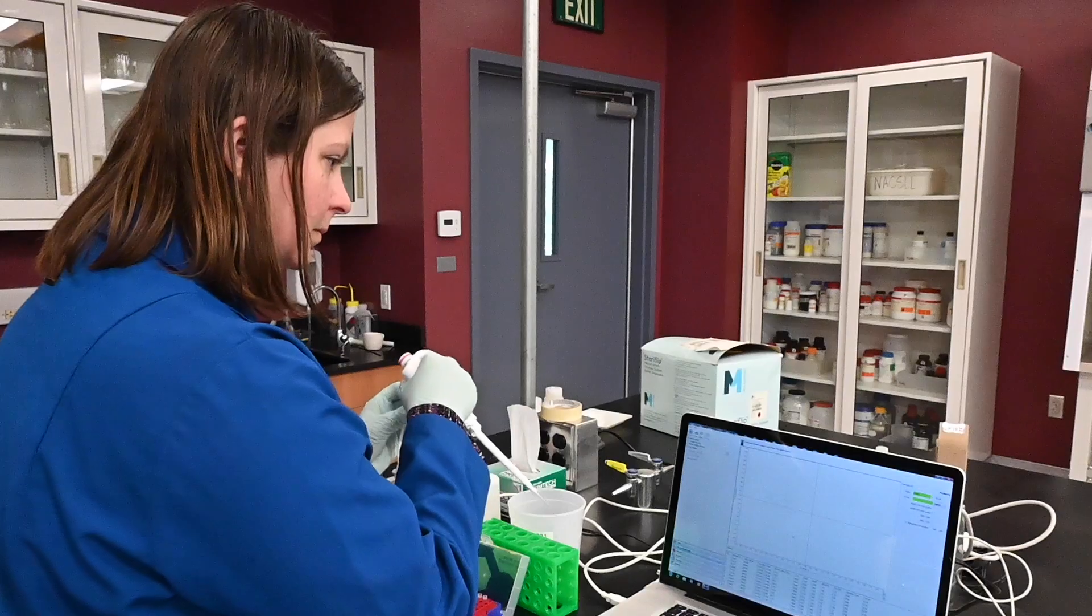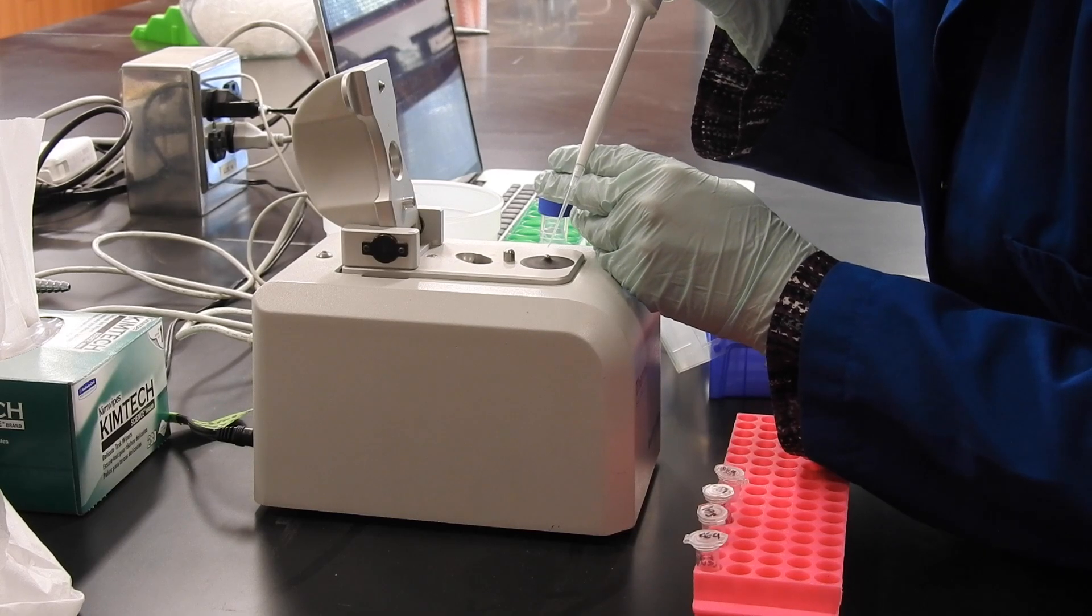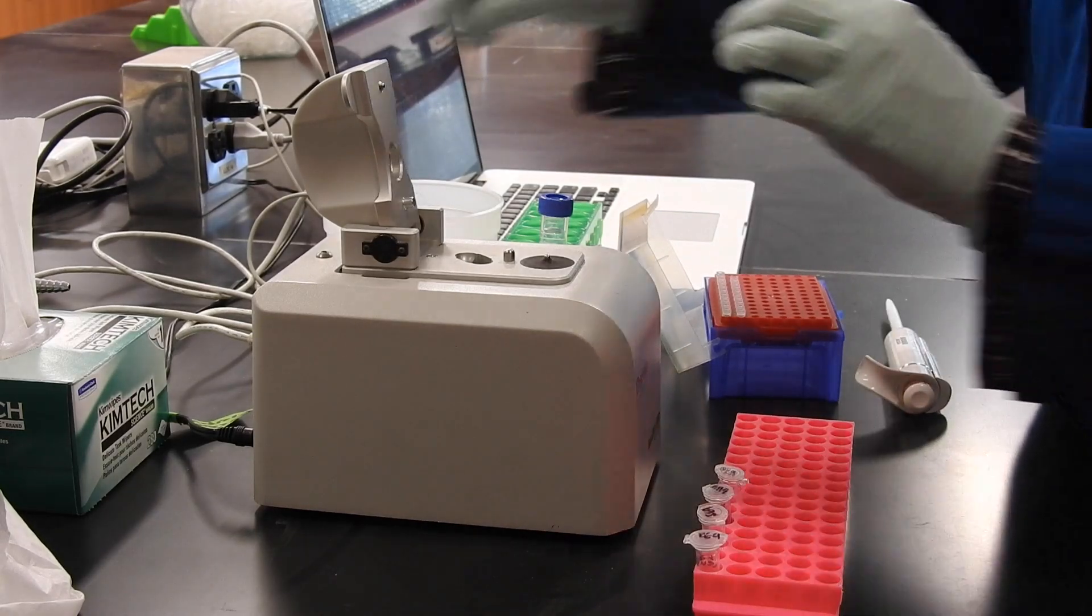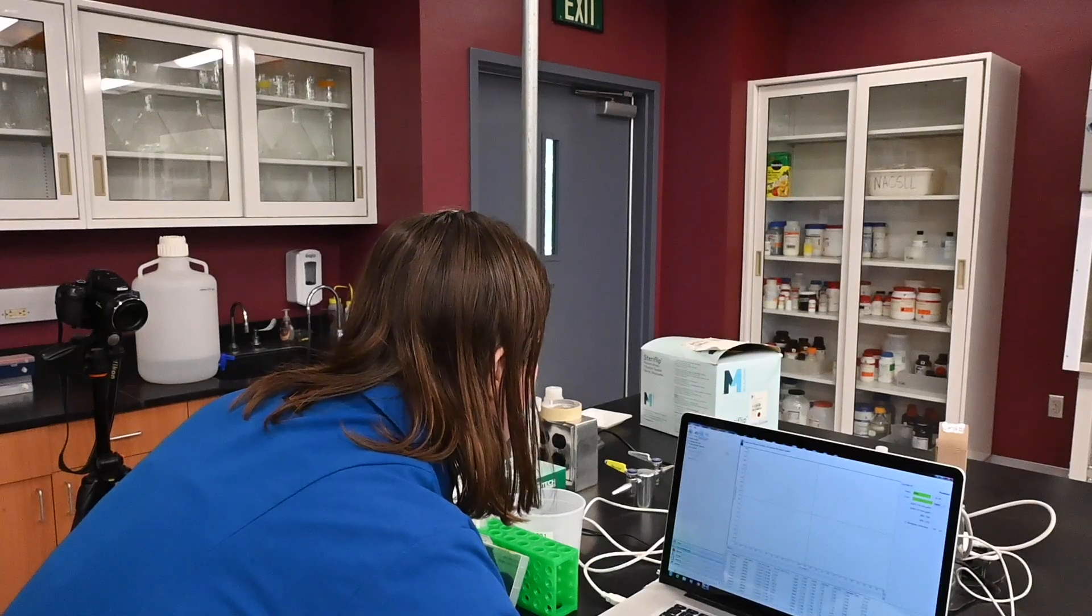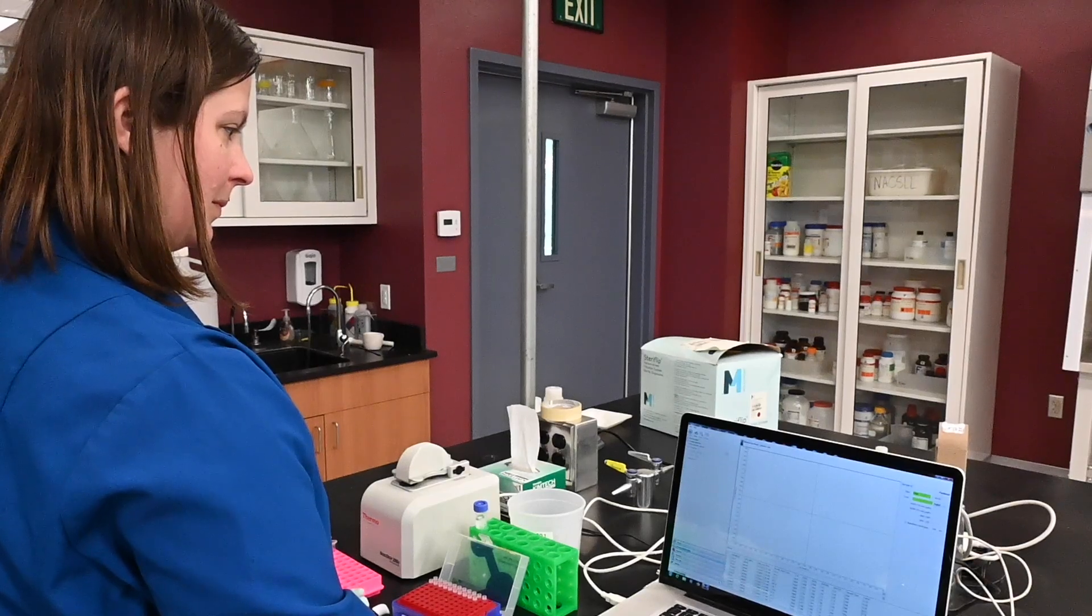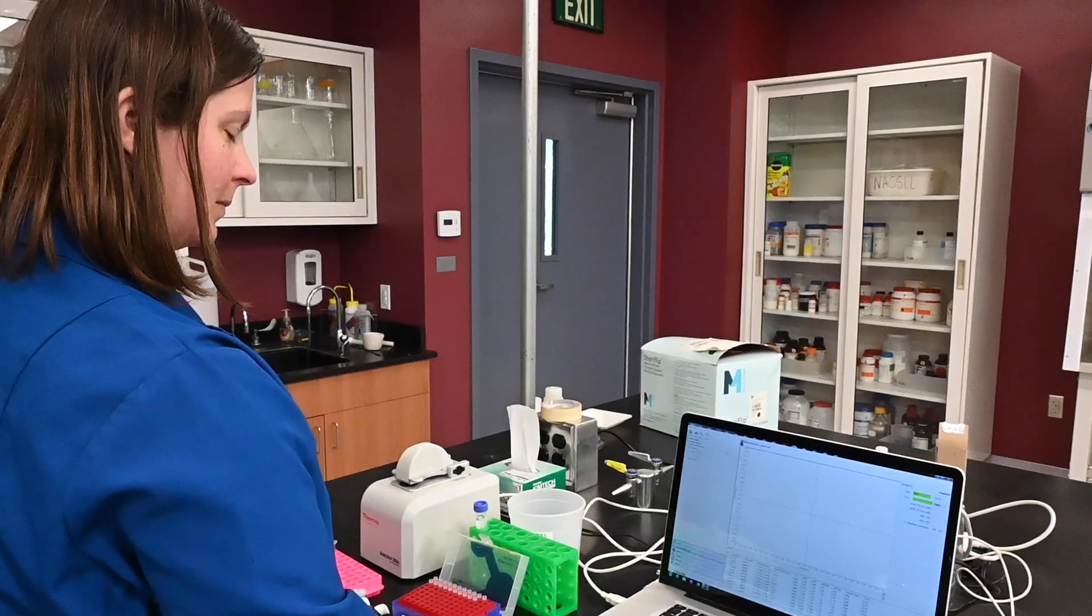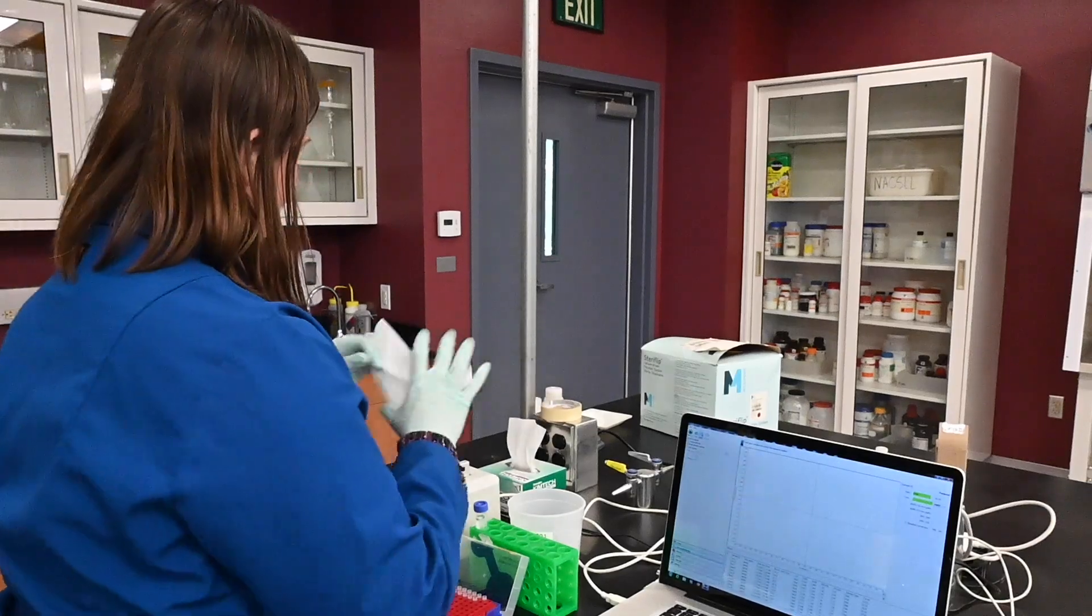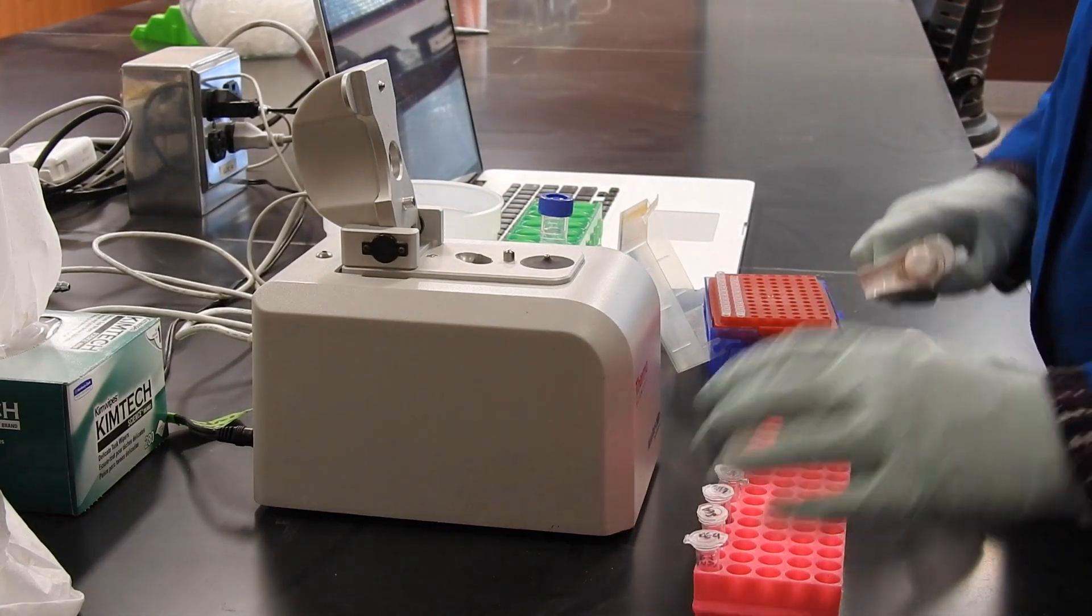So first I need to add a blank to have a background measurement. I'm taking one microliter of the resuspension buffer and carefully putting it on the pedestal. Closing the lid and that's my spectrophotometer. It's going to look at how light passes through my sample. So right now it's taking a reading. And however the light changes going through just that blank, which is just the resuspension buffer, it'll subtract that from all of my readings so that they're accurate.